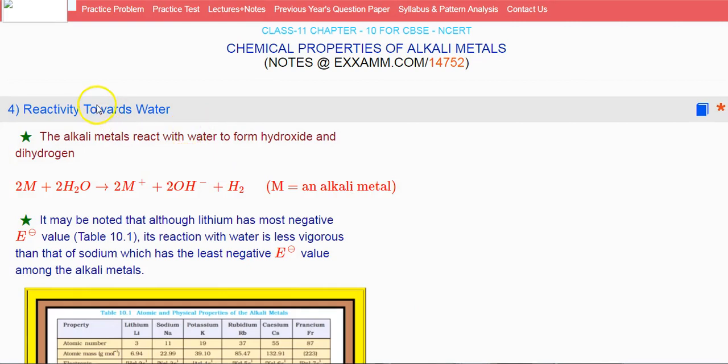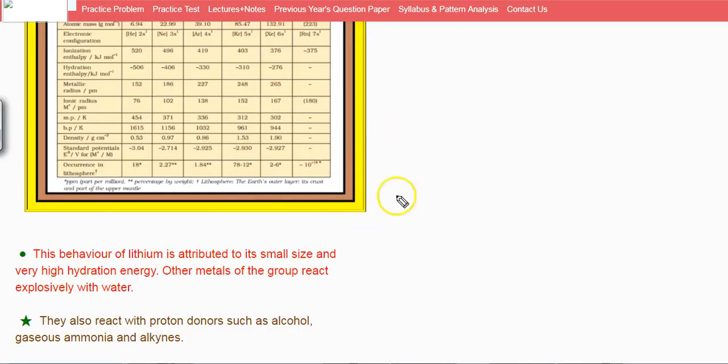Now why does lithium behave this way? This is because of its small size, and due to its small size, its hydration energy is very high. So this is how the alkali metals react with water. Thank you.